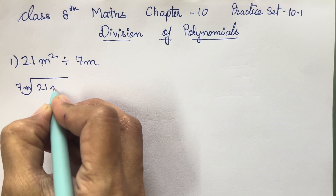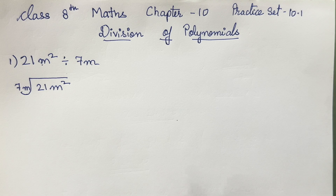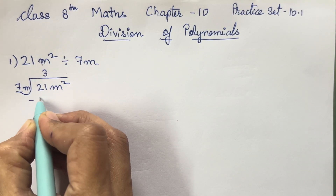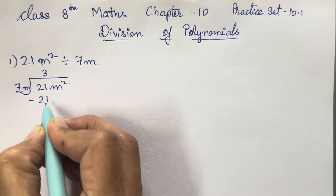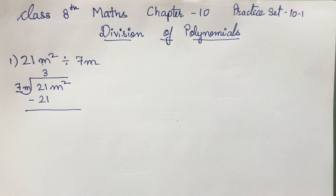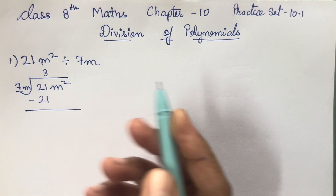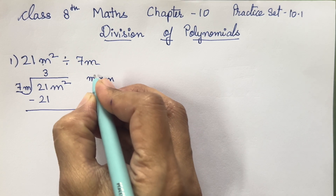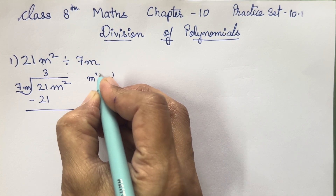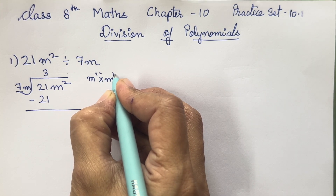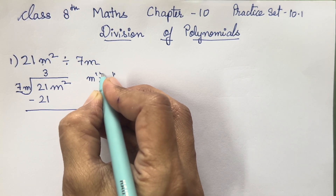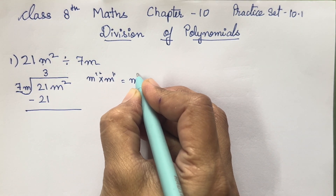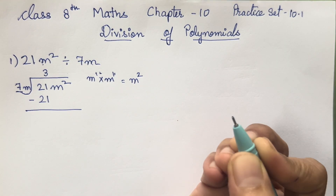We all know the division rules. So 7 threes are 21. Now over here m is there. So m into m — 1 plus 1 will come. Multiplication is there, so it is going to be m² over here.